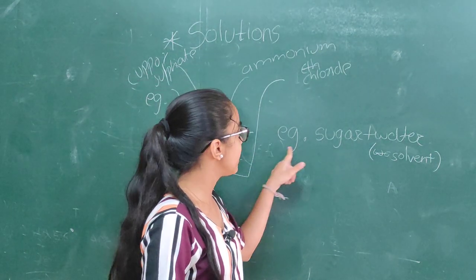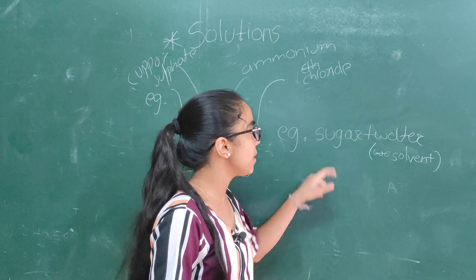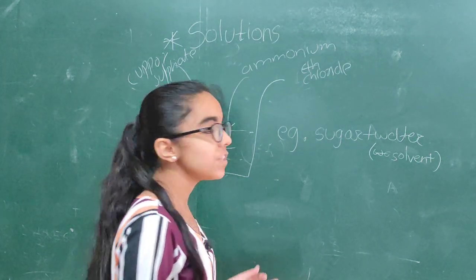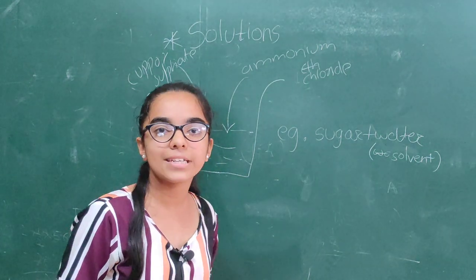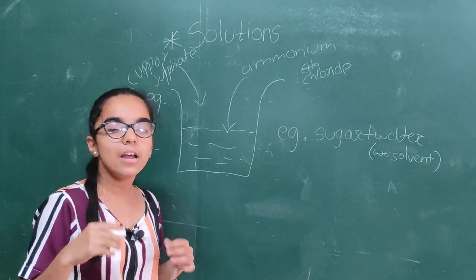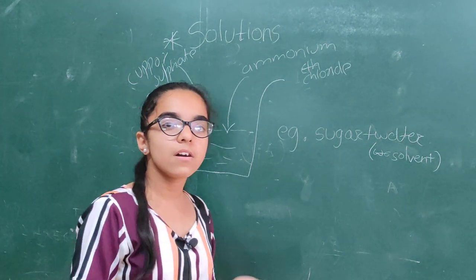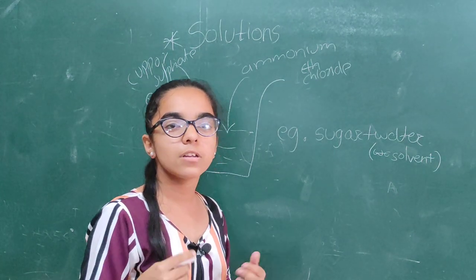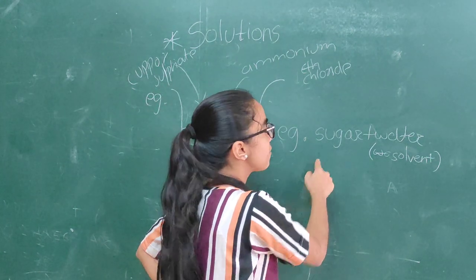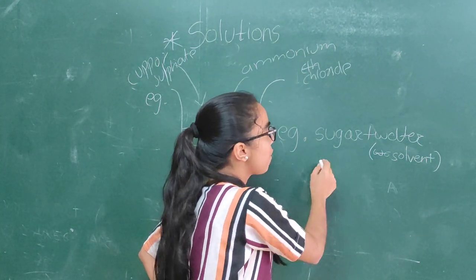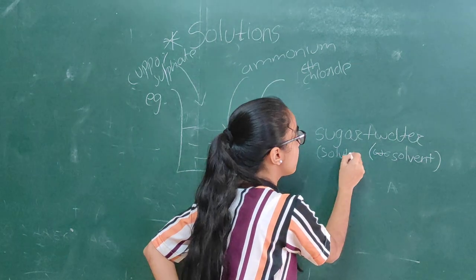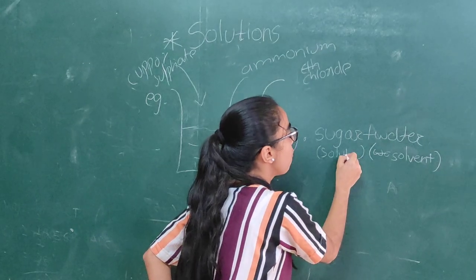In the example of sugar plus water, sugar is the solute. A solute is a substance which is in lesser quantity in a solution — a substance which dissolves in a solvent or liquid is known as a solute. Examples include sugar plus water, salt plus water, and vinegar plus water.